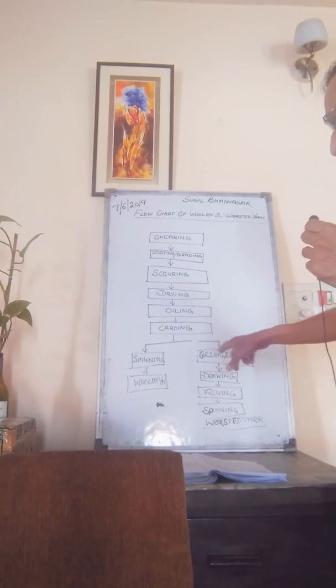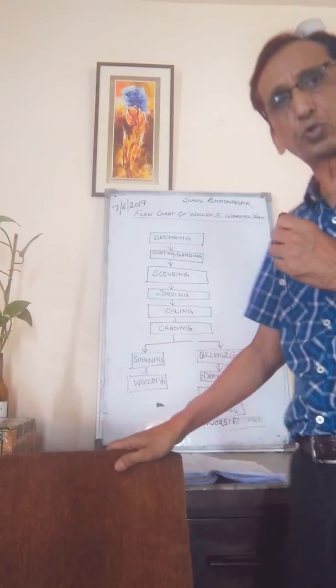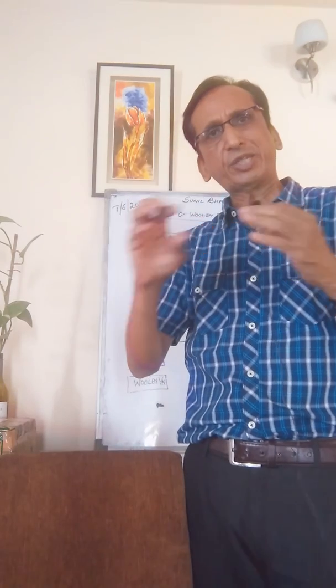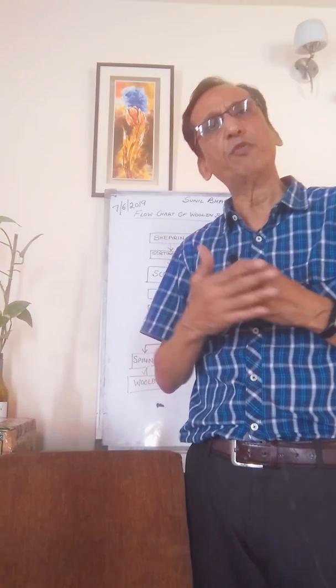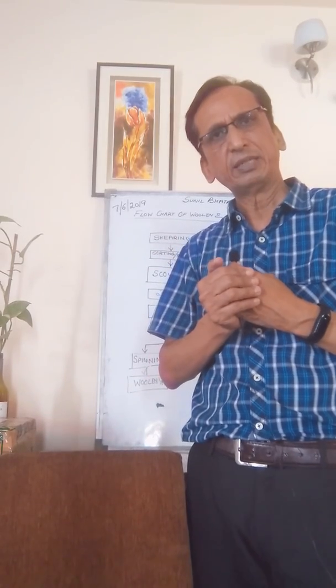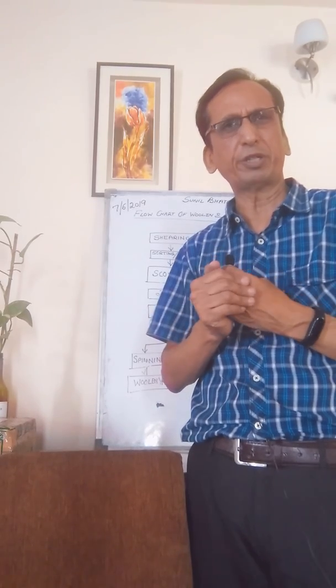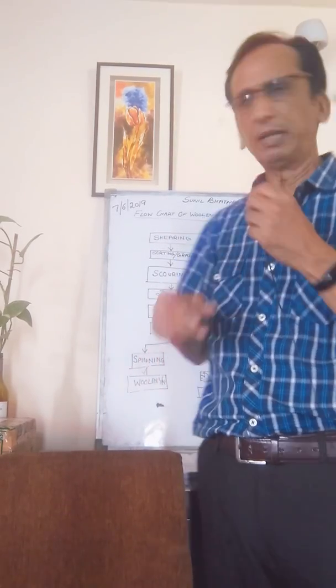When we are using the worsted process, gilling, gill box, drawing, and combing are used. The gill box works differently from drafting rollers used in cotton — here there is a chain with a number of pins. These pins move, and when inserted they not only remove short fibers and impurities but also make the fibers aligned with the material.